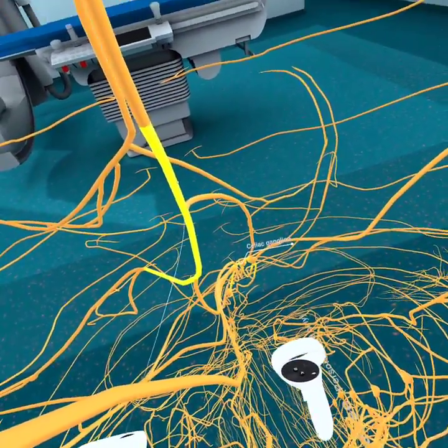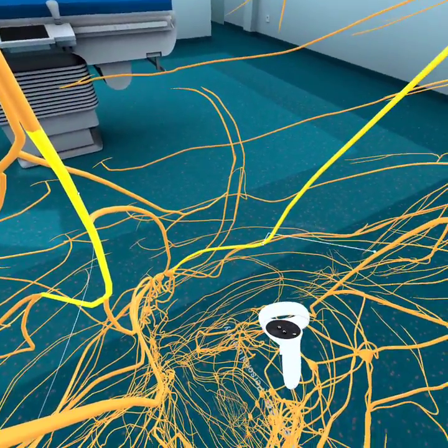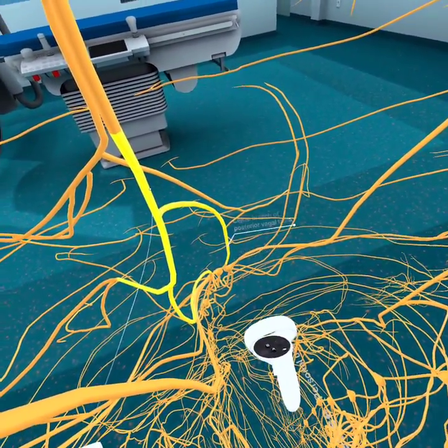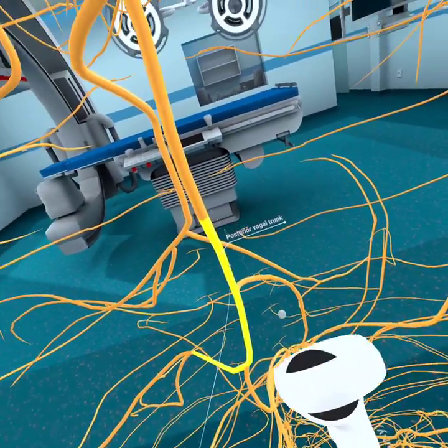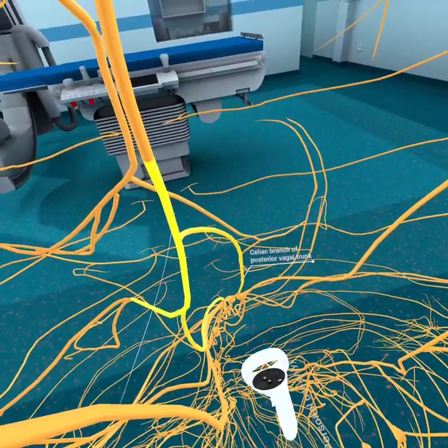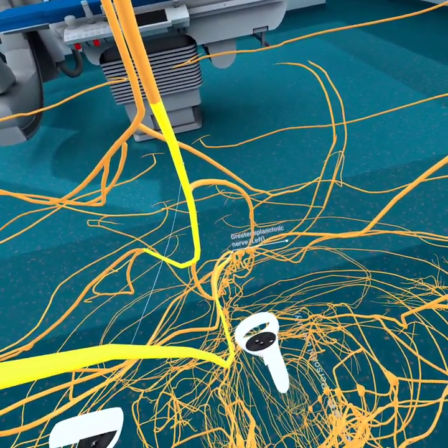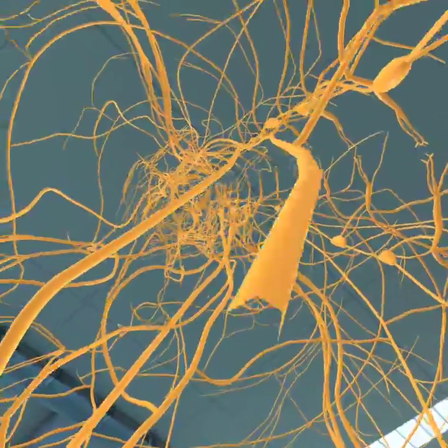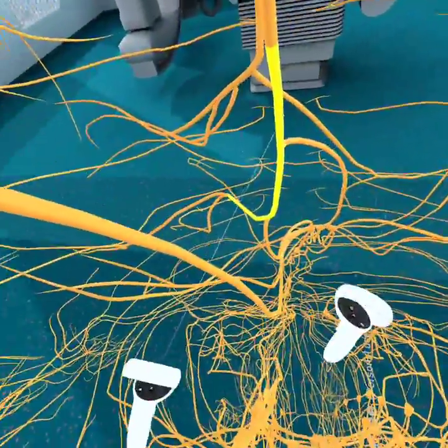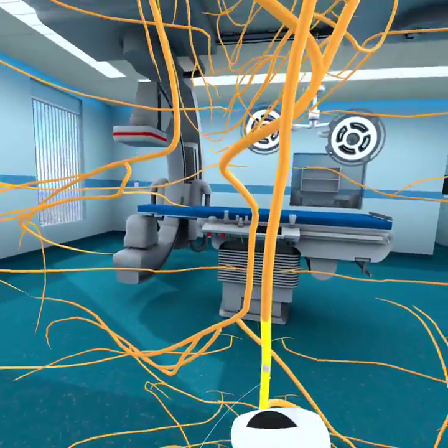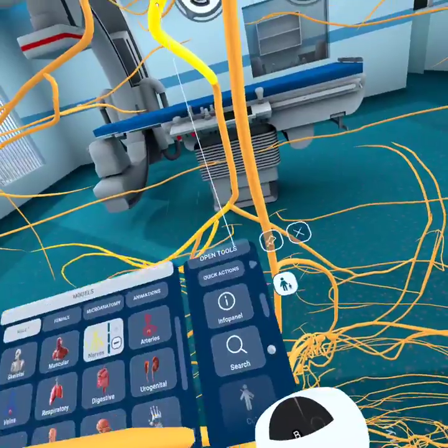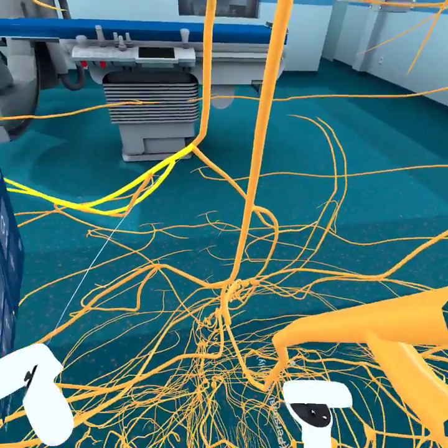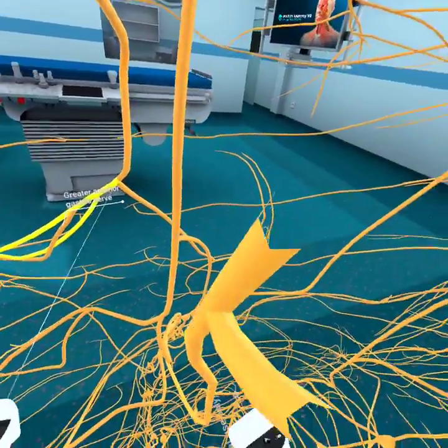Then it will join this celiac ganglion down here where you have your greater splanchnic nerve going in to join the celiac ganglion. You have our posterior vagal trunk coming off of our right vagal trunk going in to join at the celiac branch of the posterior vagal trunk into our celiac ganglion. We have our greater splanchnic nerve on the left. The left vagal nerve does not connect to the celiac trunk, I don't believe. Good to know.